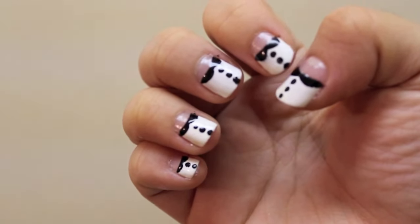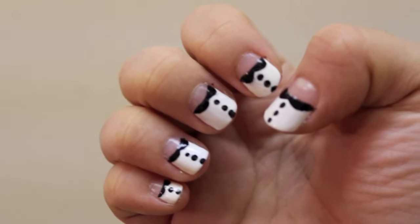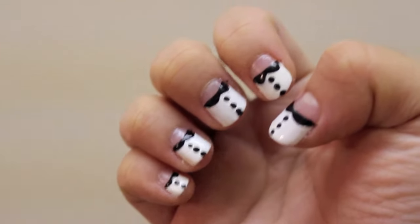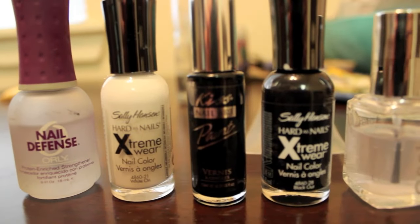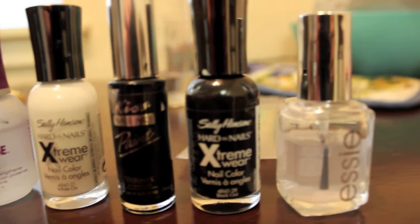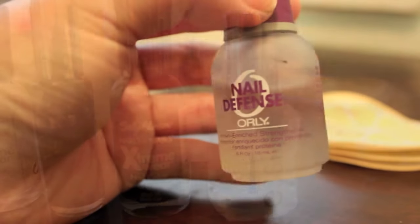I have a cute and easy nail tutorial for you guys today. It's inspired by our Peter Pan collar. So here is what you'll need. You'll need a base coat, a white polish, I have a black striper, a black polish, and a top coat.